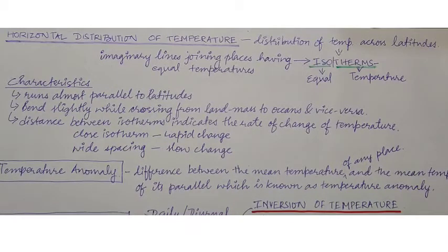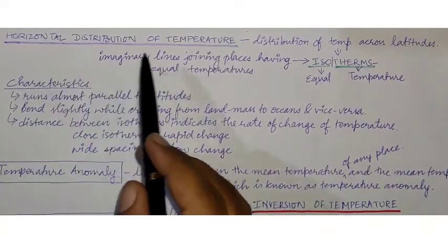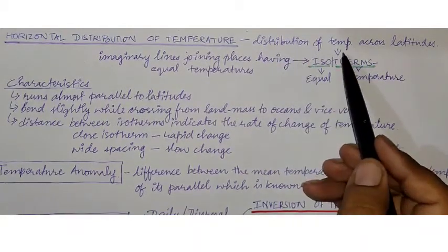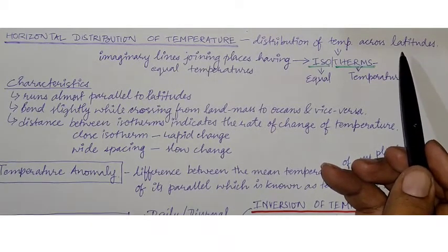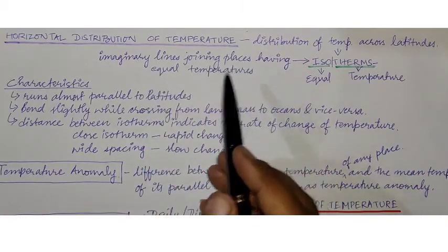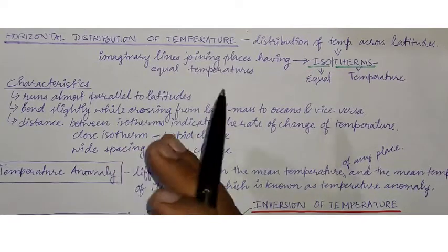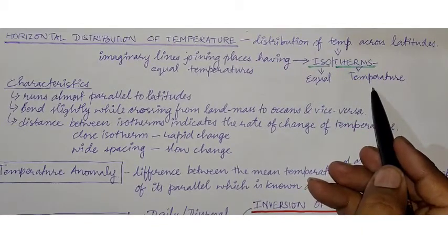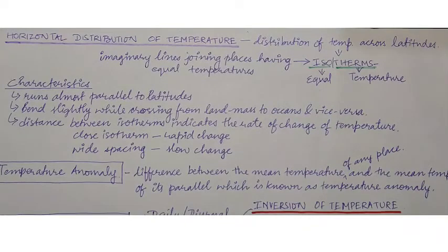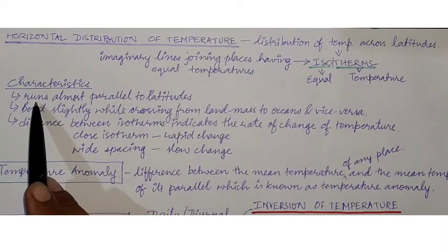Horizontal distribution of temperature means the distribution of temperature across latitudes. Places falling in the same latitude will more or less have the same temperature. That temperature is demarcated on a map with the help of an imaginary line joining places of equal temperature, and we term that as isotherms. 'Iso' means equal and 'therm' means temperature. This imaginary line is drawn on the earth's surface on a map to show places having the same temperature.